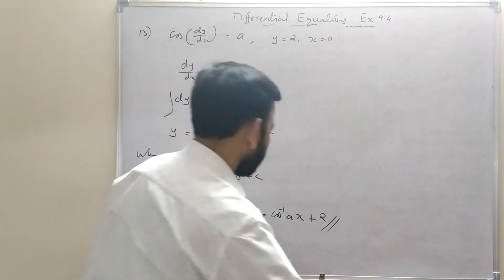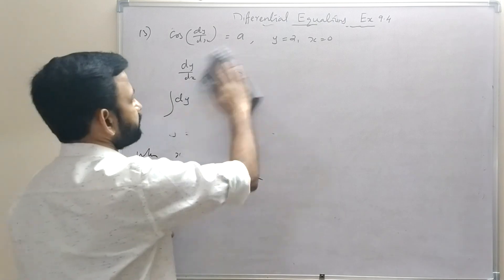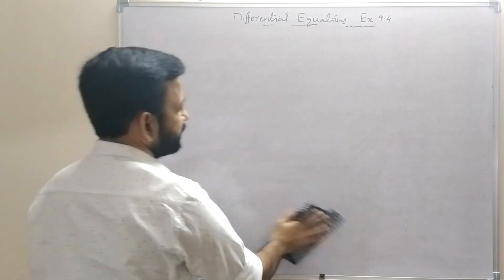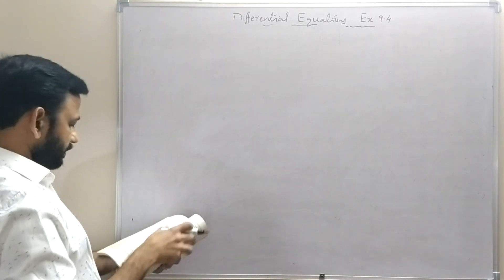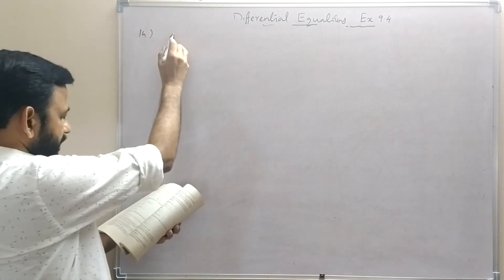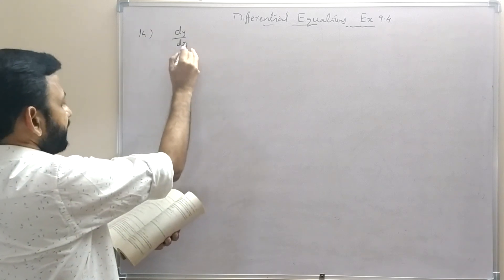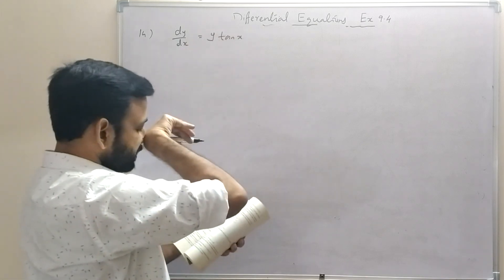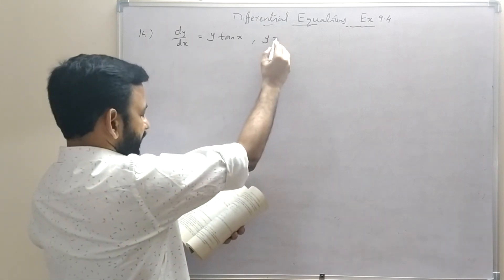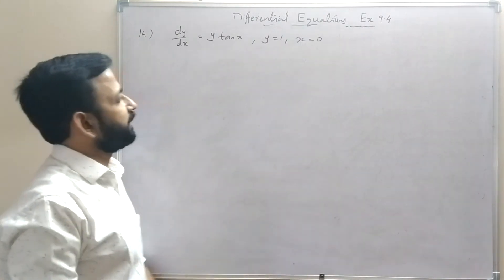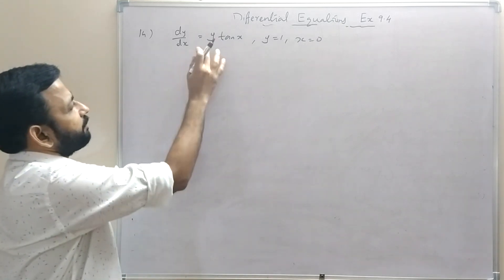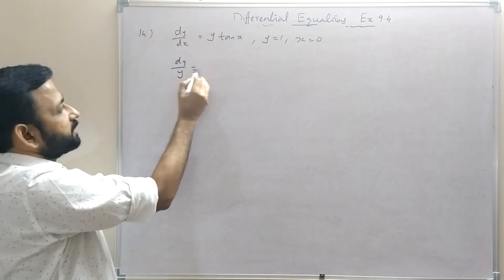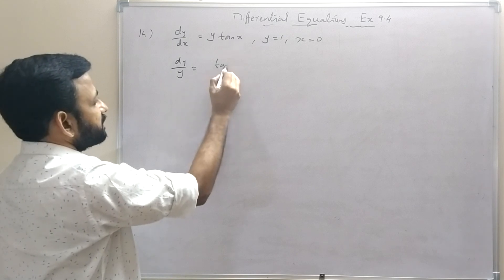Question 14: dy/dx = y tan x, when y = 1 and x = 0. Separating: dy/y = tan x dx. Integrating both sides: log|y| = log|sec x| + c (since integral of tan x = log|sec x|).